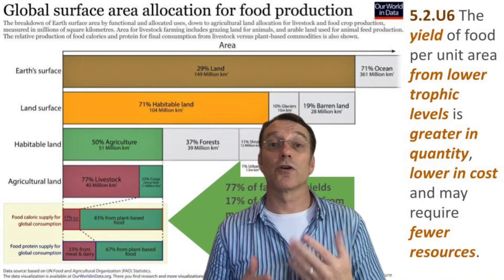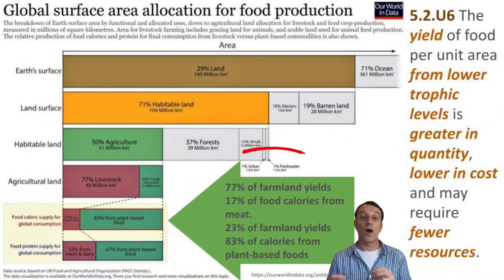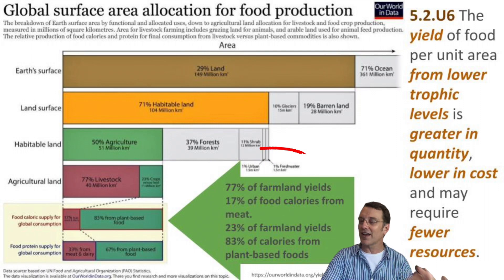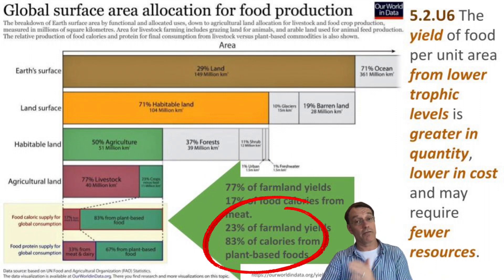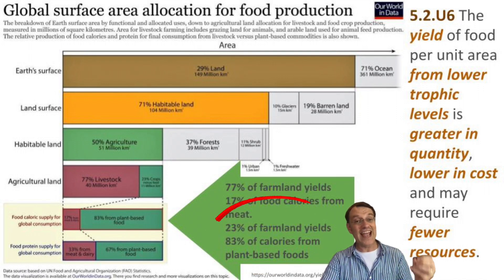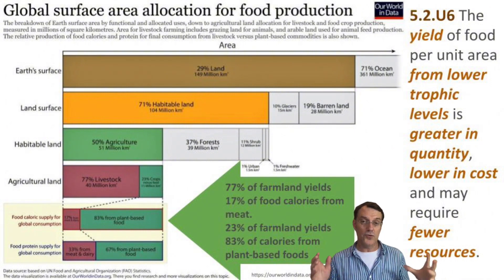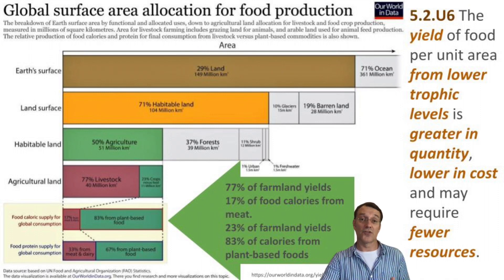Not all foods are created equal when it comes to land use. Meat production takes up a whopping 77% of global farmland, but provides only 17% of our calories. In contrast, plant-based foods use only 23% of farmland but give us 83% of all the calories consumed globally. This huge difference shows why eating lower on the food chain — more plants, less meat — can be more efficient and sustainable, and it also has major implications for climate change.